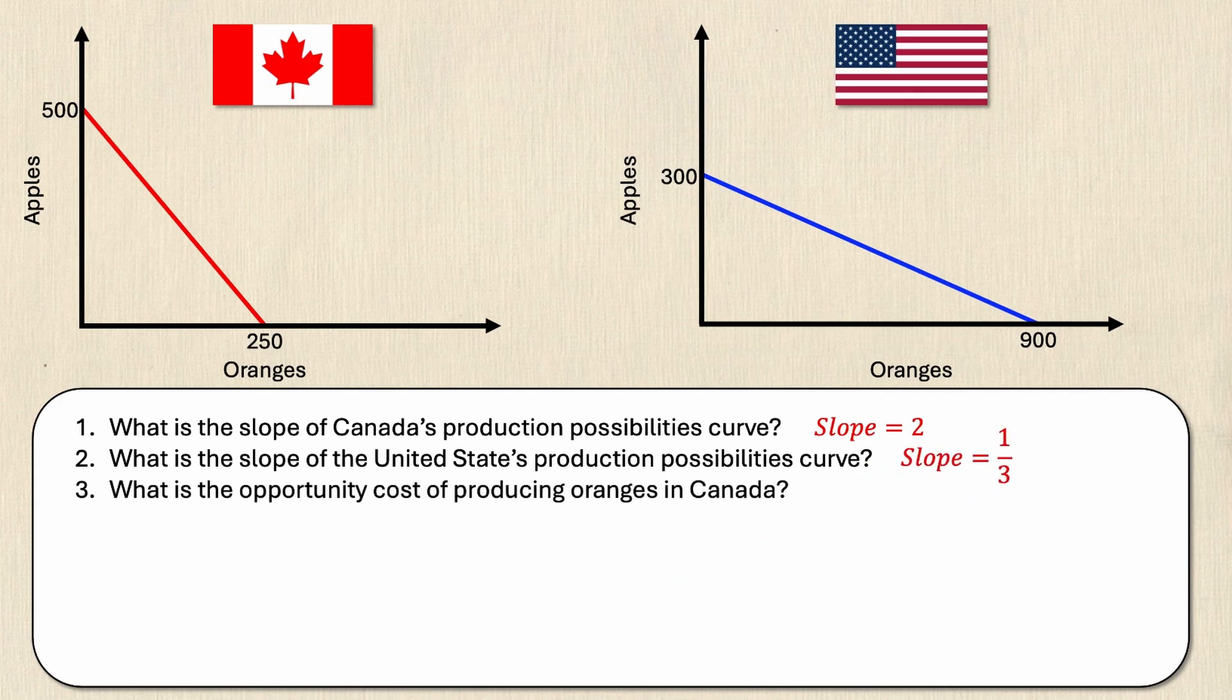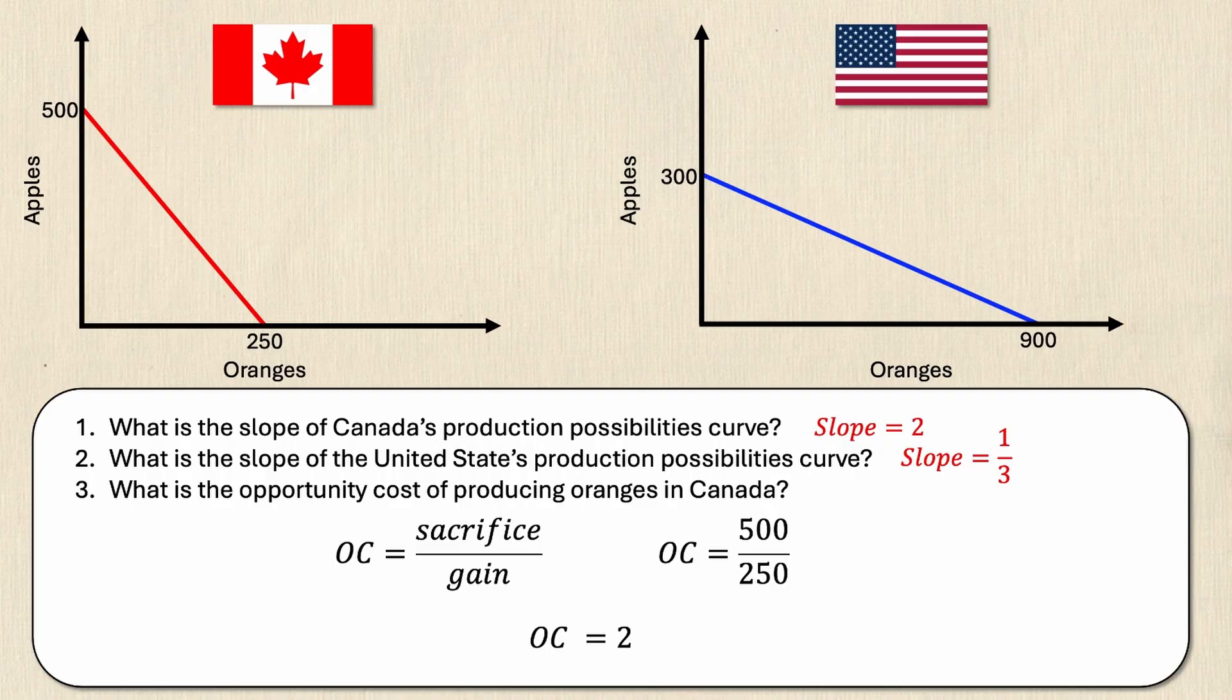Question three asks what is the opportunity cost of producing oranges in Canada? Now the opportunity cost is simply the amount you sacrifice over what you gain. So Canada would sacrifice 500 apples in order to gain 250 oranges. I can simplify this to be the opportunity cost equaling two, which you might notice is the same as the slope. Now this will always be true. The opportunity cost of the good on the x-axis will always be equal to the slope of the PPC. Again I can interpret this as one orange costs two apples in terms of production.